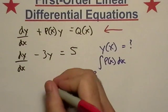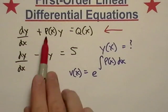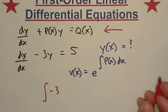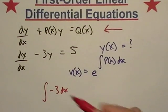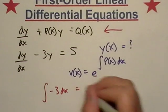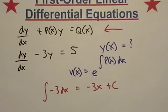What is the integral of P(x)? Remember P(x) was equal to negative three if we just compare our form right there. So integral of negative three, since it's a function of x we'll integrate with respect to x, and we get negative three x plus c.